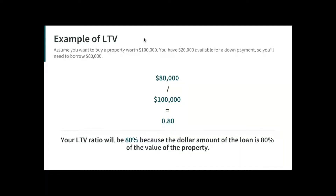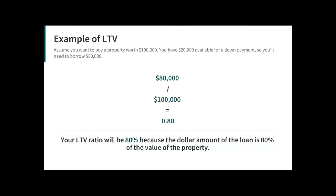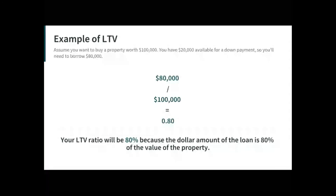The difference between the percent a lender will finance and the property's total value is the amount of cash you will have to put into the deal. So if the lender will do 80% loan to value, that means you need 20% down to secure the mortgage. I'm going to turn it over to Victor now to give you a quick demo of how this works.